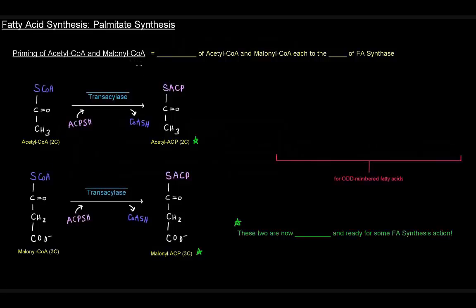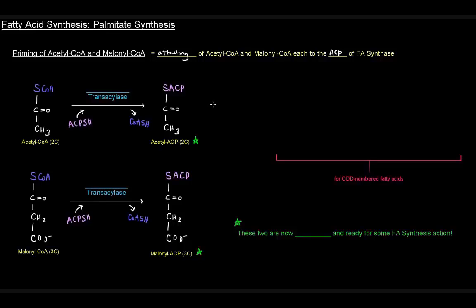In this video, we're going to talk about palmitate synthesis and the actual reactions of it. Before the reactions can occur, we need what's called the priming of acetyl-CoA and malonyl-CoA, which is essentially attaching acetyl-CoA and malonyl-CoA each to the acyl carrier protein of the fatty acid synthase complex. The acyl carrier protein carries the substrates from catalytic site to catalytic site, so we need to attach the substrates to the ACP before that can happen.